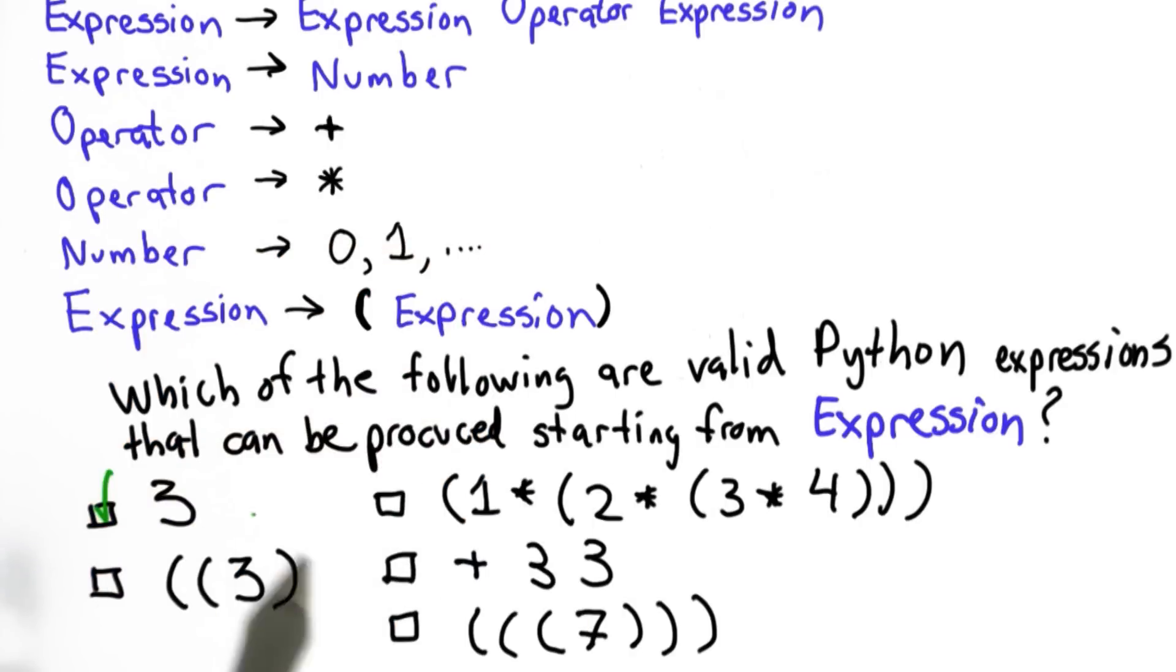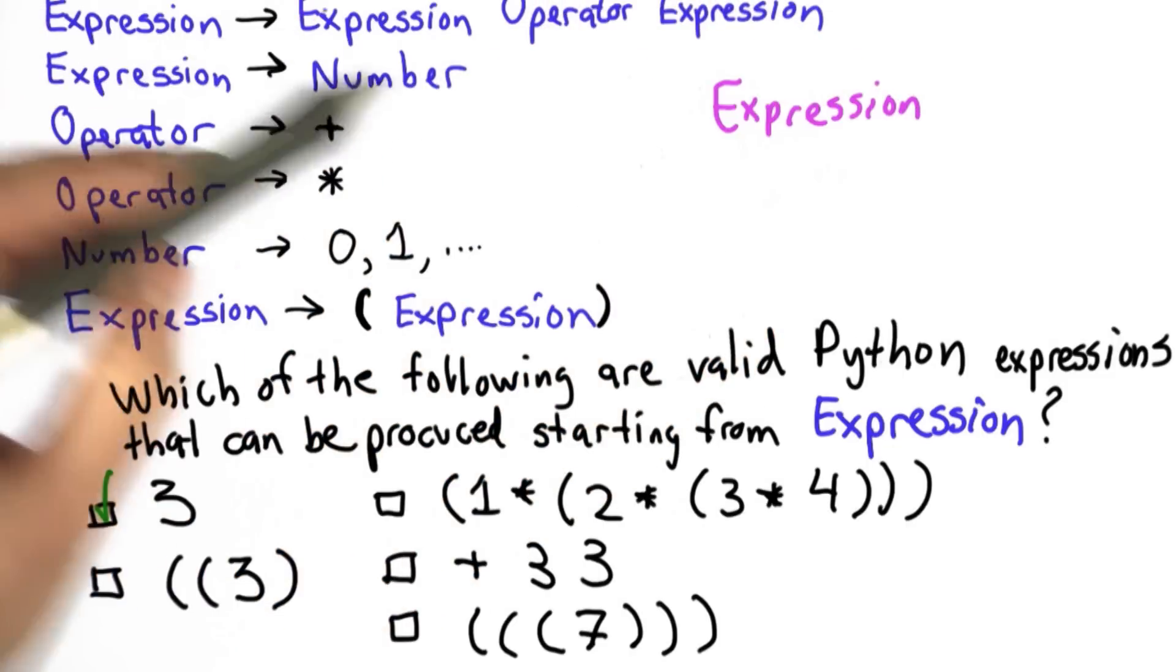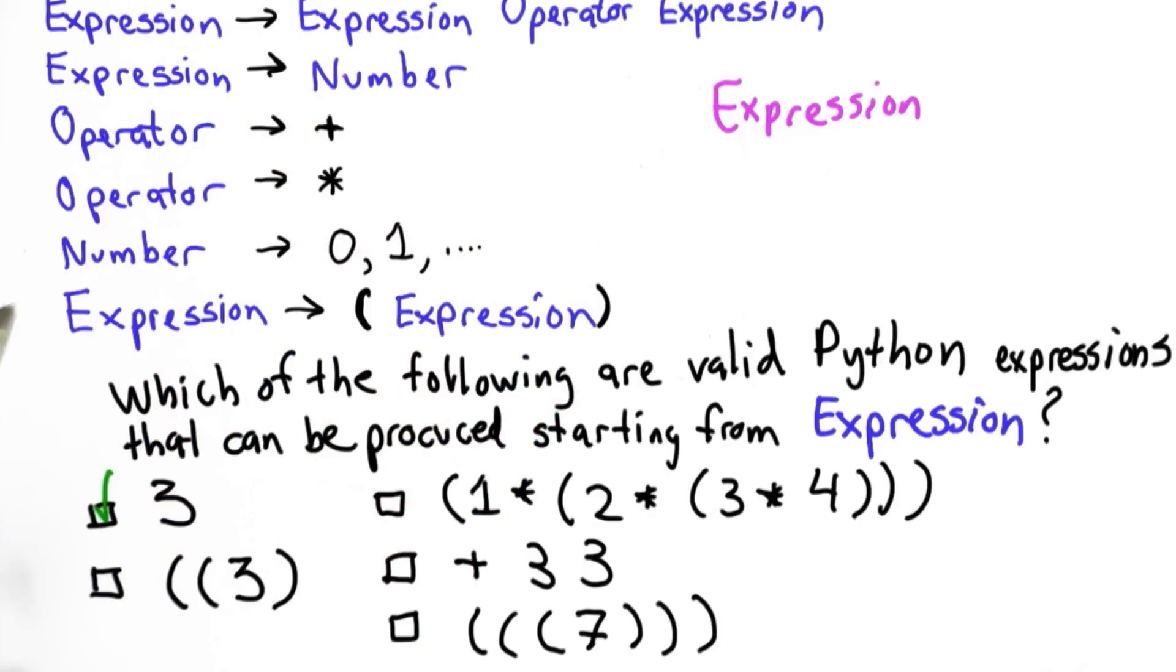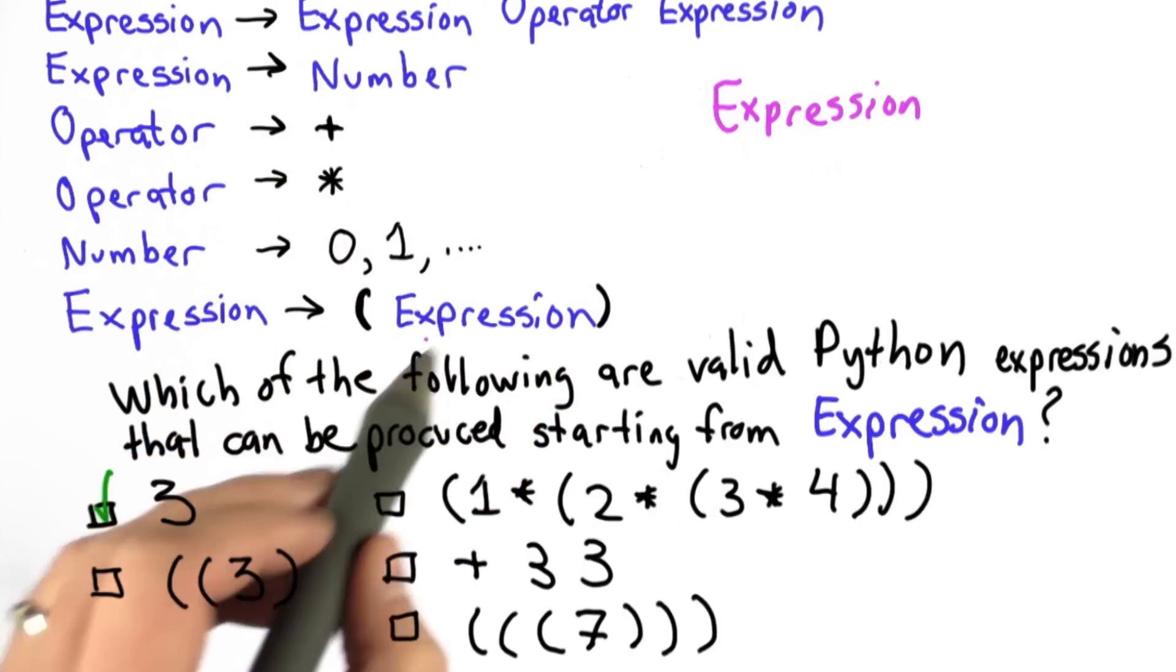The second one is not valid, and the way to see that is if we start from expression, we only have 3 choices. We can replace it with expression operator expression. We can replace it with number, or we can replace it with a left paren, expression right paren.